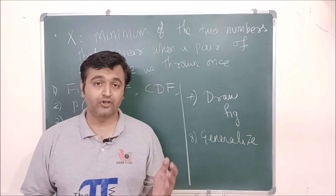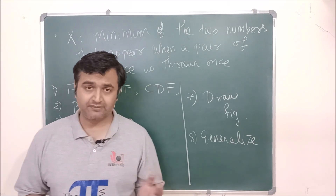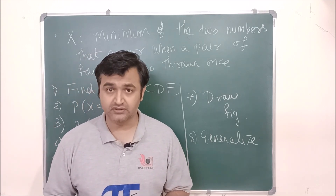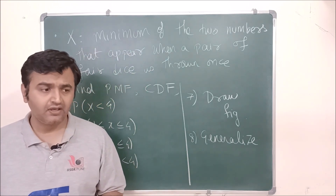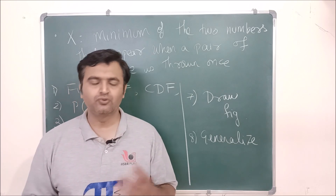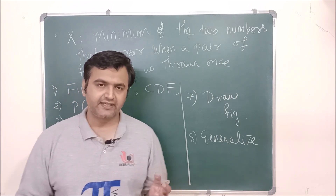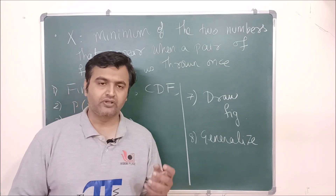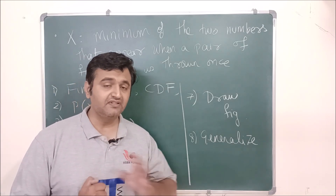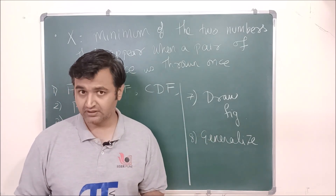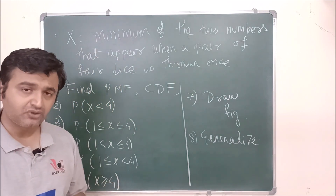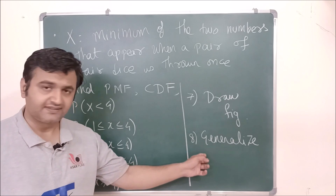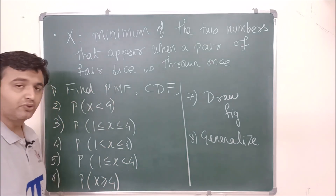Hey everyone. So in the last lecture I talked about PMF (probability mass function) and CDF (cumulative distribution function) and took some examples. Then a few students requested that I take a more general example. While thinking about that, I thought I should also mention some formulas that I didn't cover in the earlier lecture. So before stating those formulas, let me take this one nice example and then we will try to generalize it.